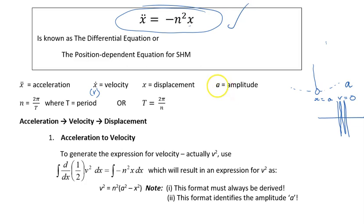You're going to see a introduced. We know that n is two pi on the period, and T is two pi on n. Okay, let's have a look.